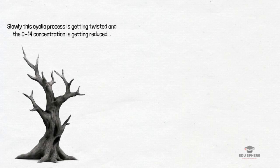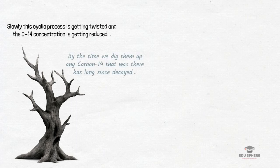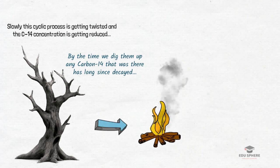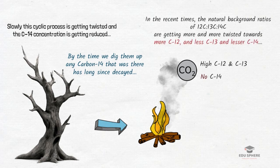However, this cyclic process is getting twisted and the carbon-14 concentration is getting reduced. You see, tons and tons of plant material get buried and compressed over vast stretches of geologic time. By the time we dig them up, any carbon-14 that was there has long since decayed. So when we burn these fossil fuels, the carbon we are adding to the atmosphere is enriched in carbon-12 and carbon-13 but depleted of carbon-14. So ultimately what happens is that, when we measure the atmospheric carbon dioxide concentration, we can see that over the last 100 years or so, the natural background ratios of carbon-12, 13 and 14 are getting more and more twisted towards more carbon-12 and less carbon-13 and lesser carbon-14. This is one of the many lines of evidence which show that rise in carbon dioxide in the atmosphere is caused by the burning of fossil fuels.